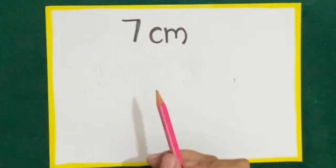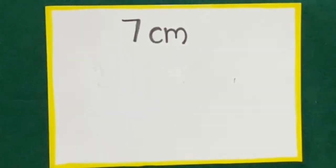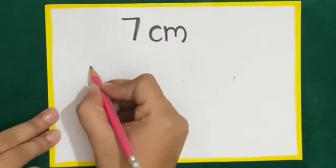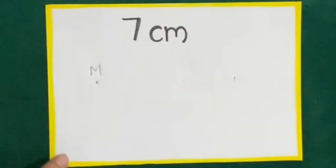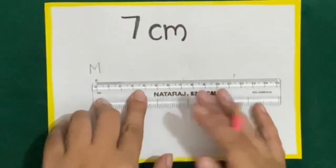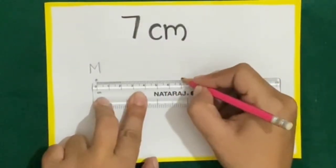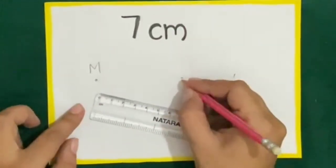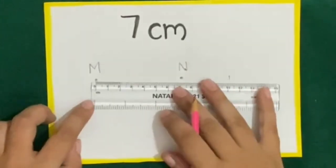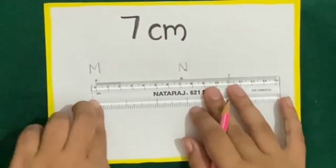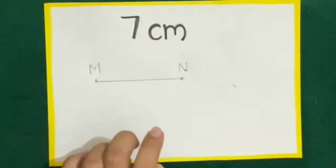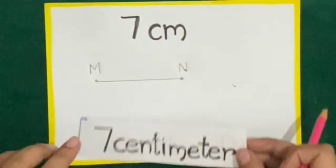Now the length given is 7 centimeters. To draw a line of 7 centimeters, we will mark a point M, then place the 0 point at M and mark another point at a distance of 7 centimeters and name it N. Then draw a line along the edge of the scale. The length of this line is 7 centimeters.